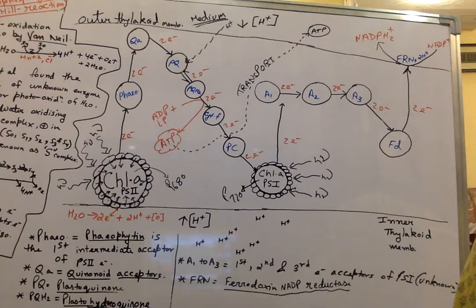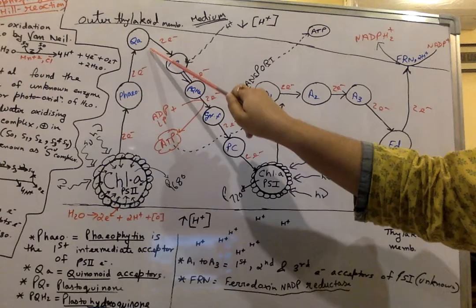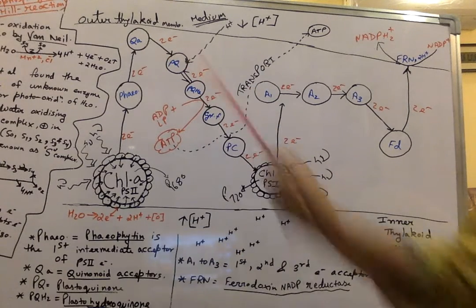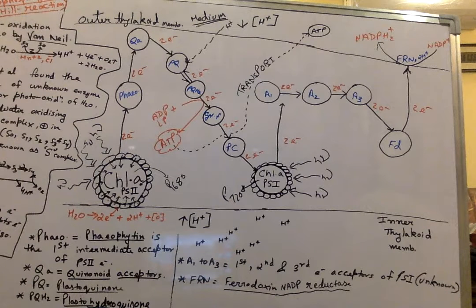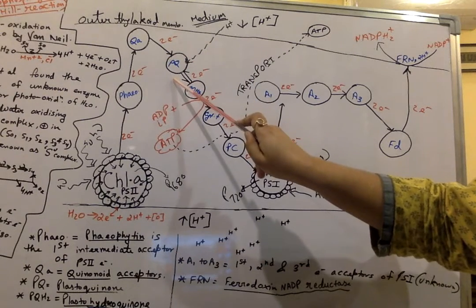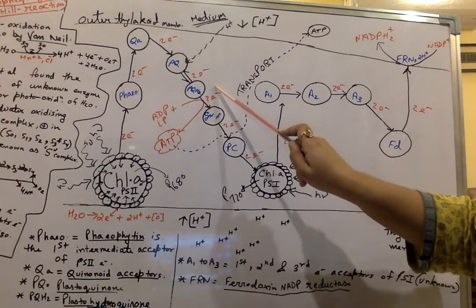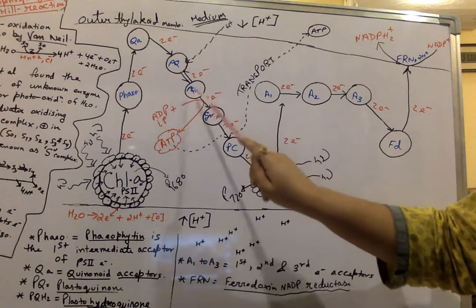Electrons from photo-oxidation of water are trapped by the reaction center of PS2, which is P680. From Pheophytin, the quinoid acceptor QA will accept the electron. Then PQ will accept the electron along with uptake of a hydrogen ion to form PQH2, which is plastohydroquinone. From QA (quinoid acceptor), electrons flow to PQ (plastoquinone), forming PQH2 with uptake of hydrogen ions from the outer thylakoid membrane. This is a reversible reaction.